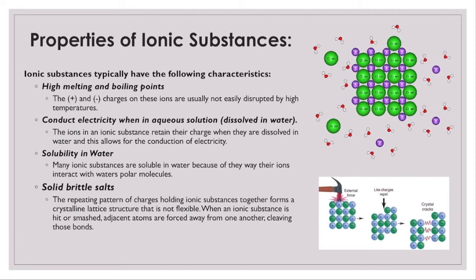Ionic substances typically have high melting and boiling points because the positive and negative charges on their ions are not easily disrupted by high temperatures — unlike covalent bonds where electrons gain too much energy. Ionic substances can conduct electricity when in aqueous solution. Dry salt does not conduct electricity, but when an ionic substance is dissolved in water, the positive and negatively charged ions float around separately, and those separated charges allow for the conduction of electricity through the substance.